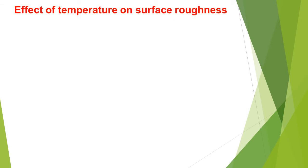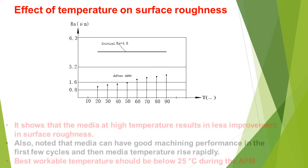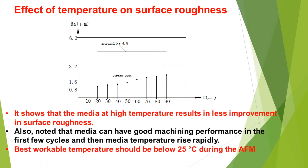The effect of temperature on surface roughness — this graph shows that media at high temperature results in less improvement in surface roughness. It is also noted that media can have good machining performance in the first few cycles, and then media temperature rises rapidly. Best workable temperature should be below 25 degrees centigrade during the AFM process.